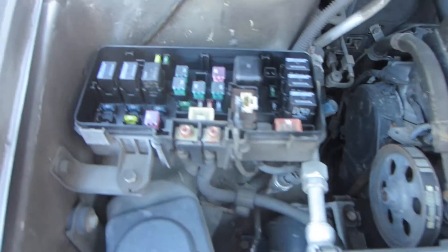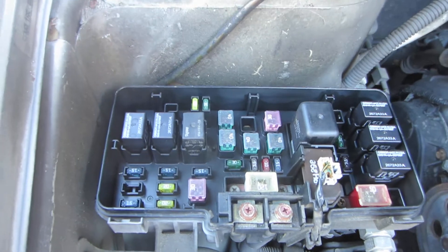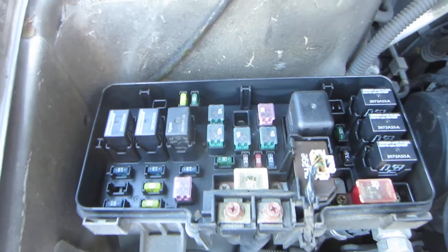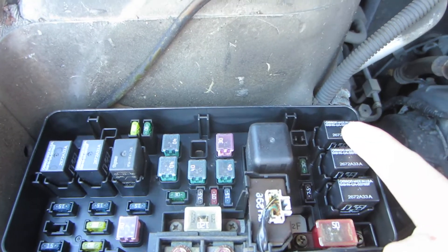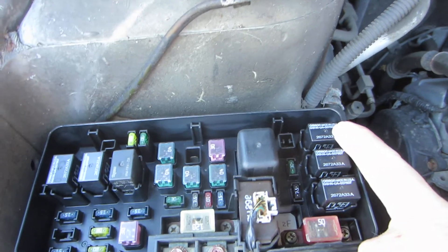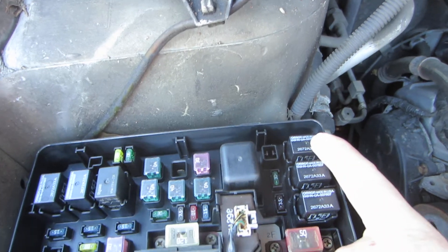So this is the fuse box. This is the condenser fan relay right here that comes on when your air conditioner is on and the engine gets hot. This is the cooling fan relay right here.